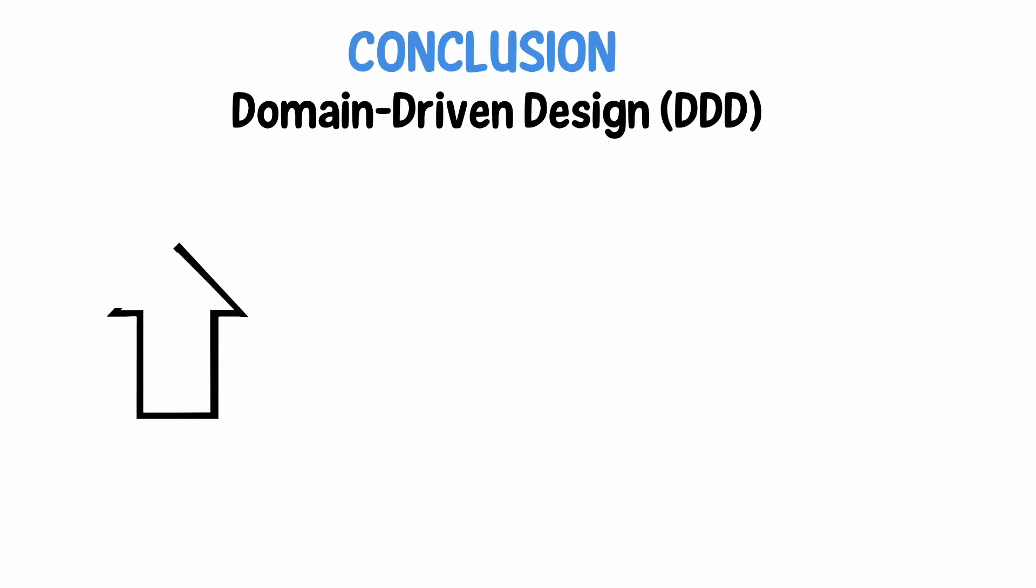In conclusion, DDD is a code ordering formula that significantly increases readability in the scope of responsibility of a given part of the application.